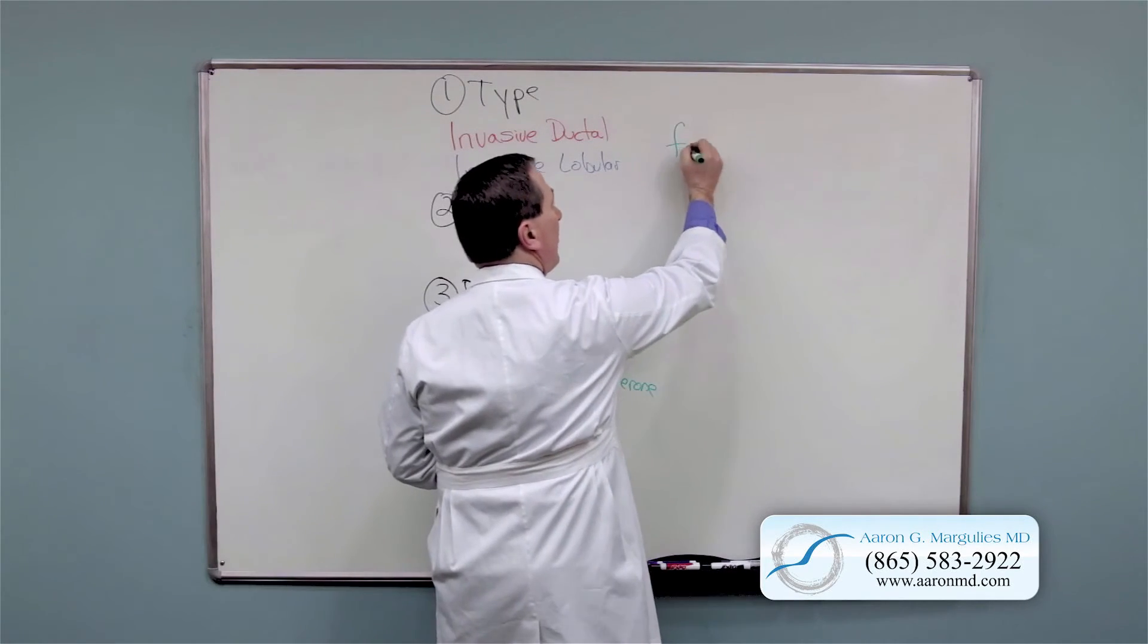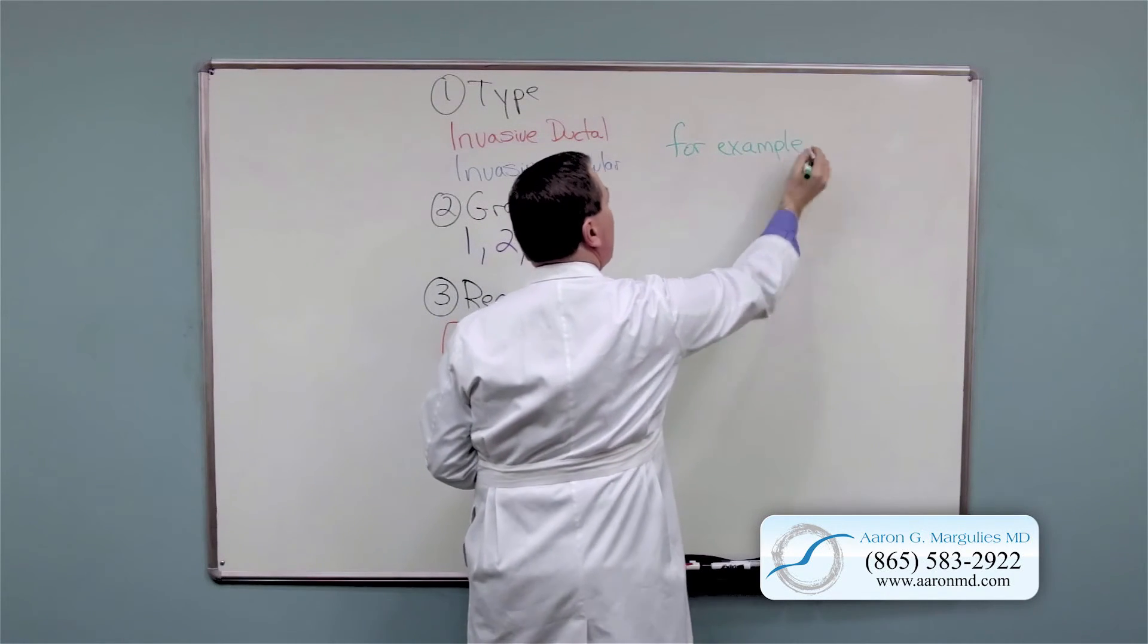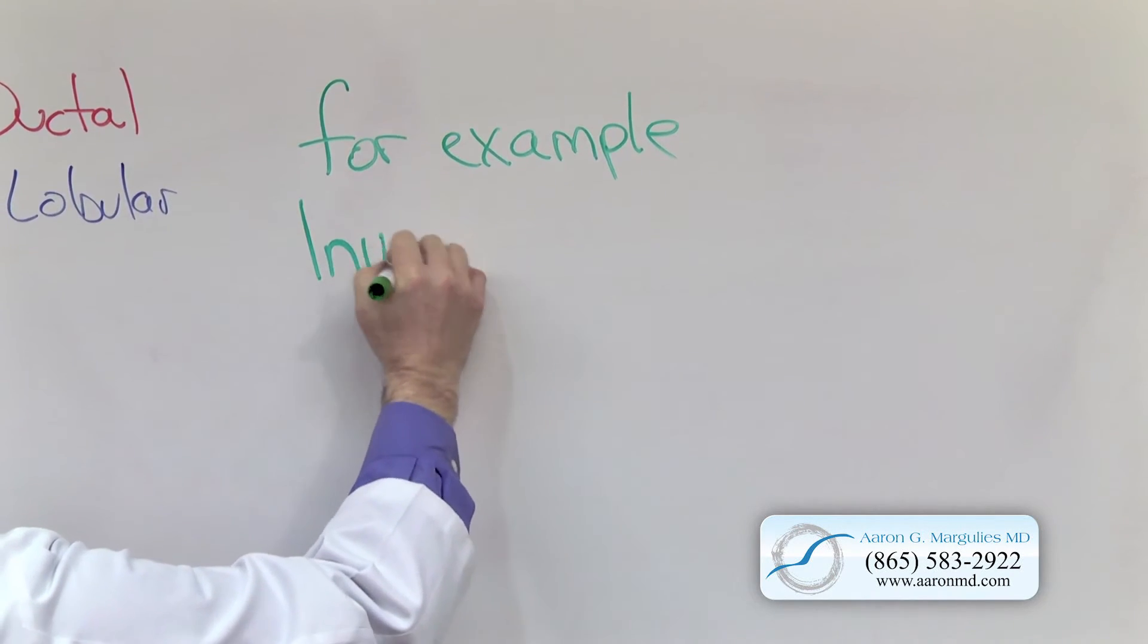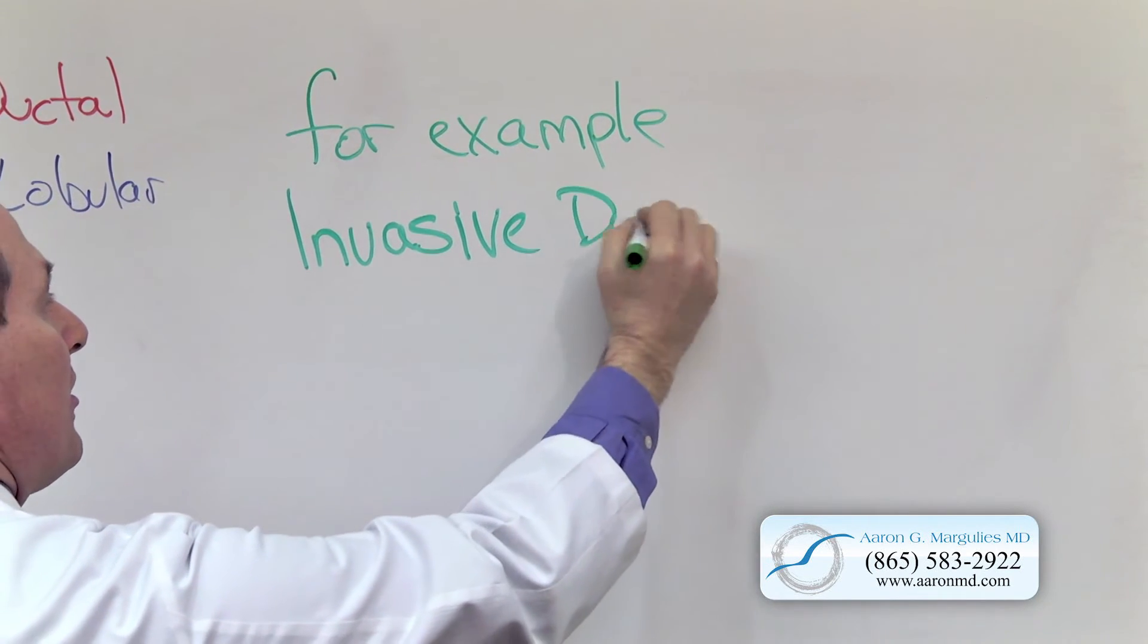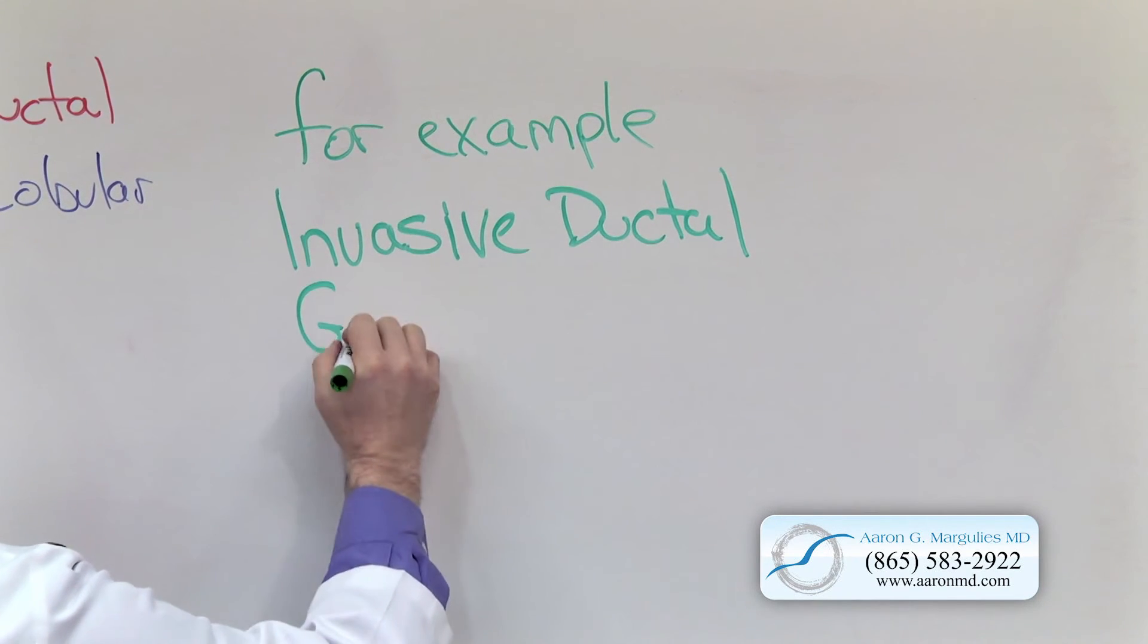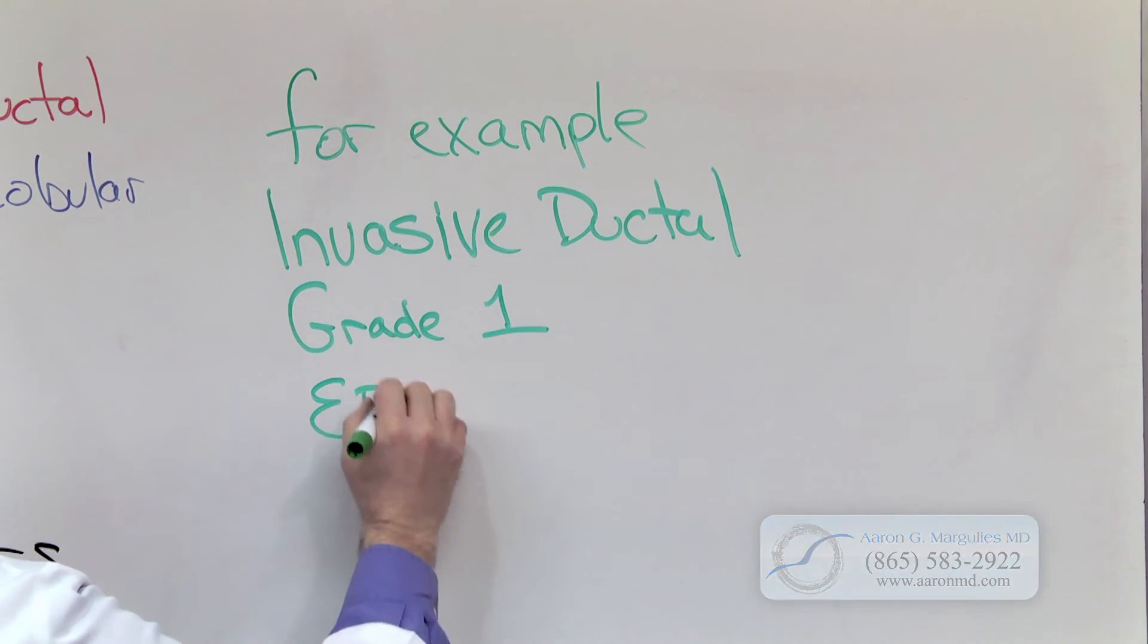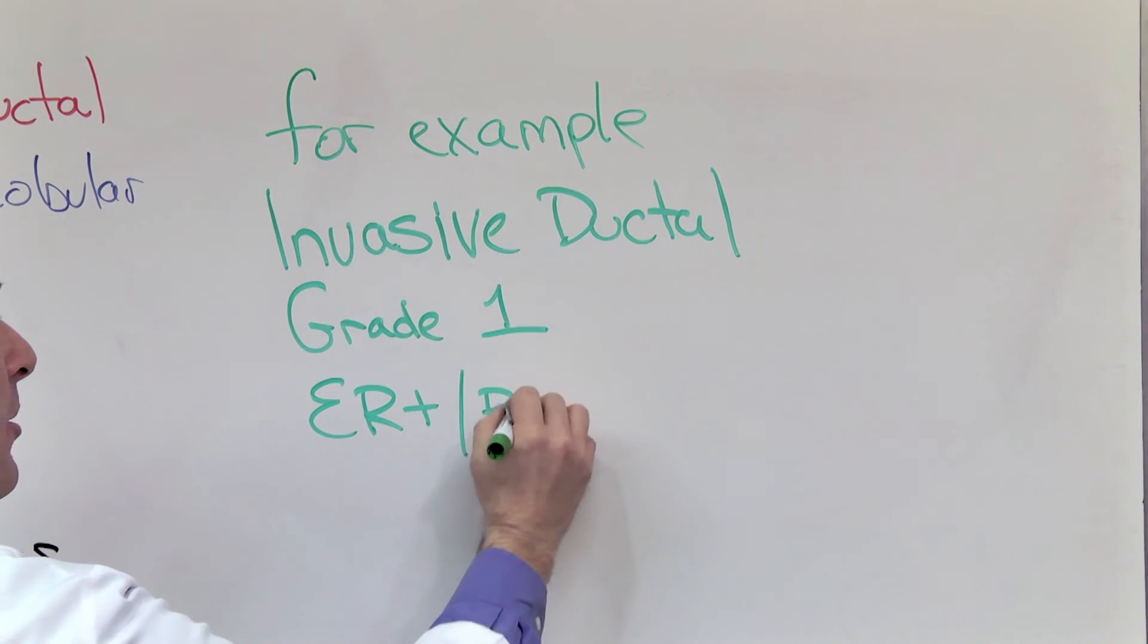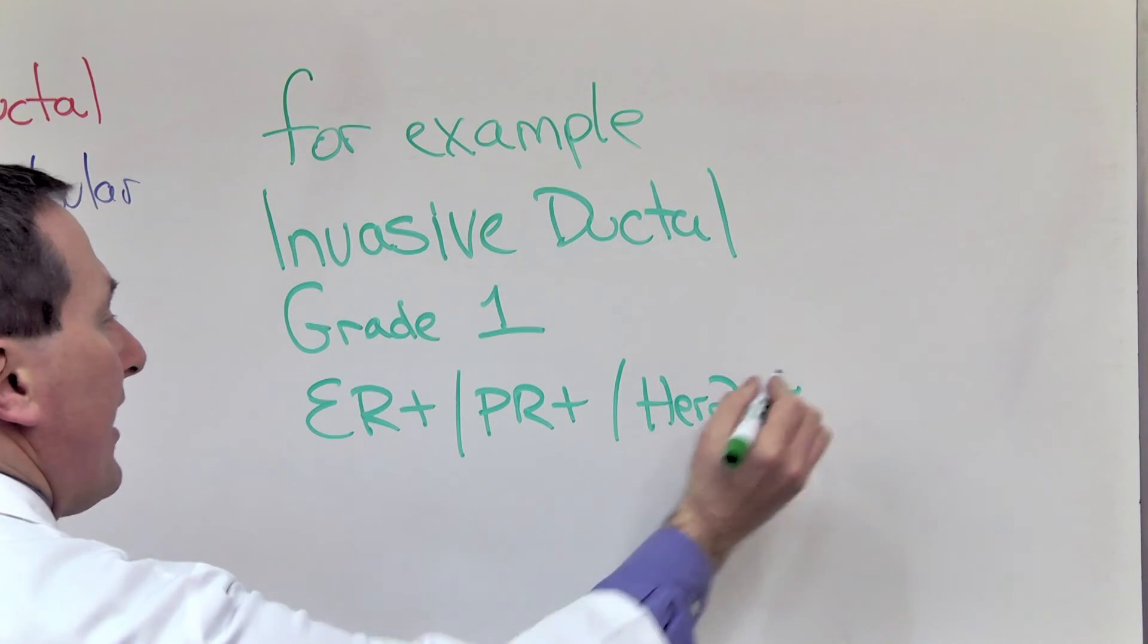So, for example, we might describe a breast cancer as an invasive ductal grade 1 ER positive, PR positive, HER2 negative.